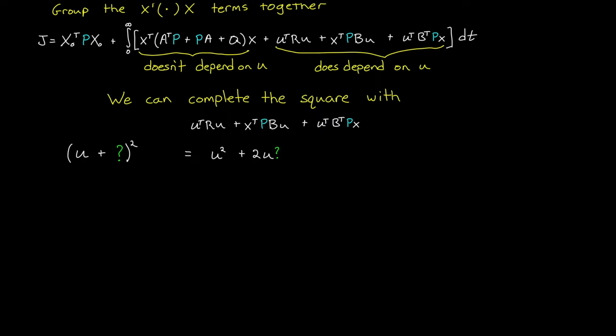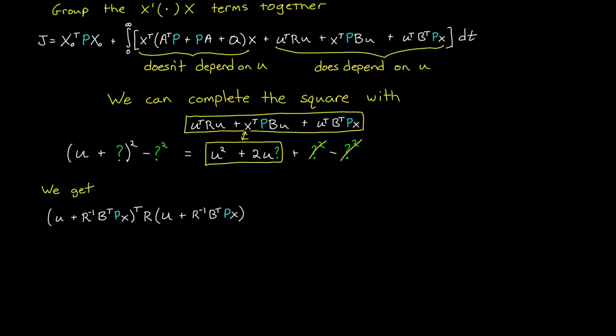And since we just want to match those first two terms, we have to remove this unknown value squared at the end. And so we're looking really to just put this equation over here into this square form. And this is what it looks like. Notice that we have this U plus additional term scaled by R and squared, and then we subtract the square of that additional term, just like we expected. And you can expand all of this out and see that it is actually equal to what we started with.